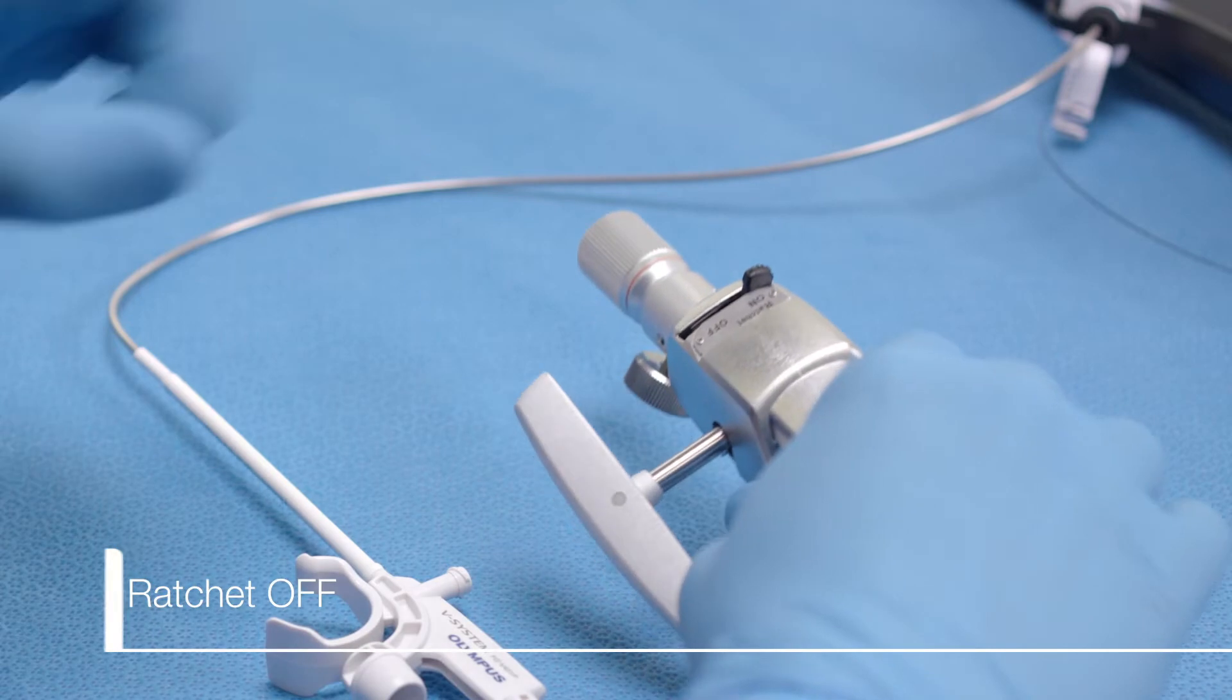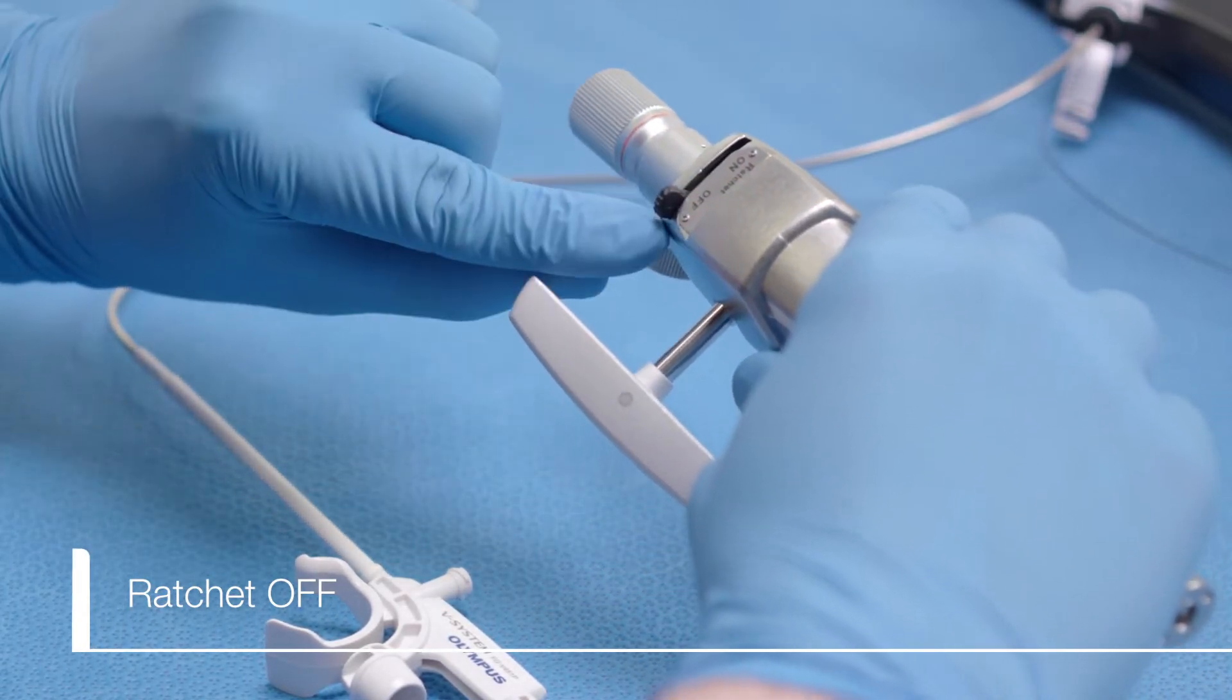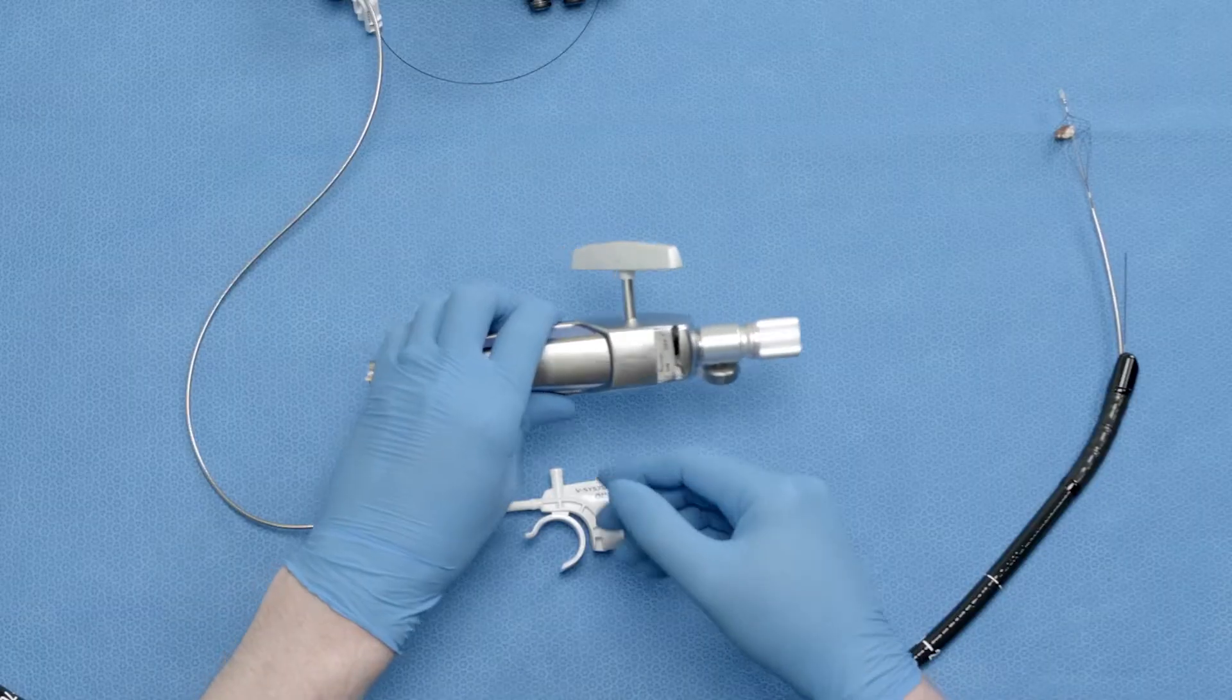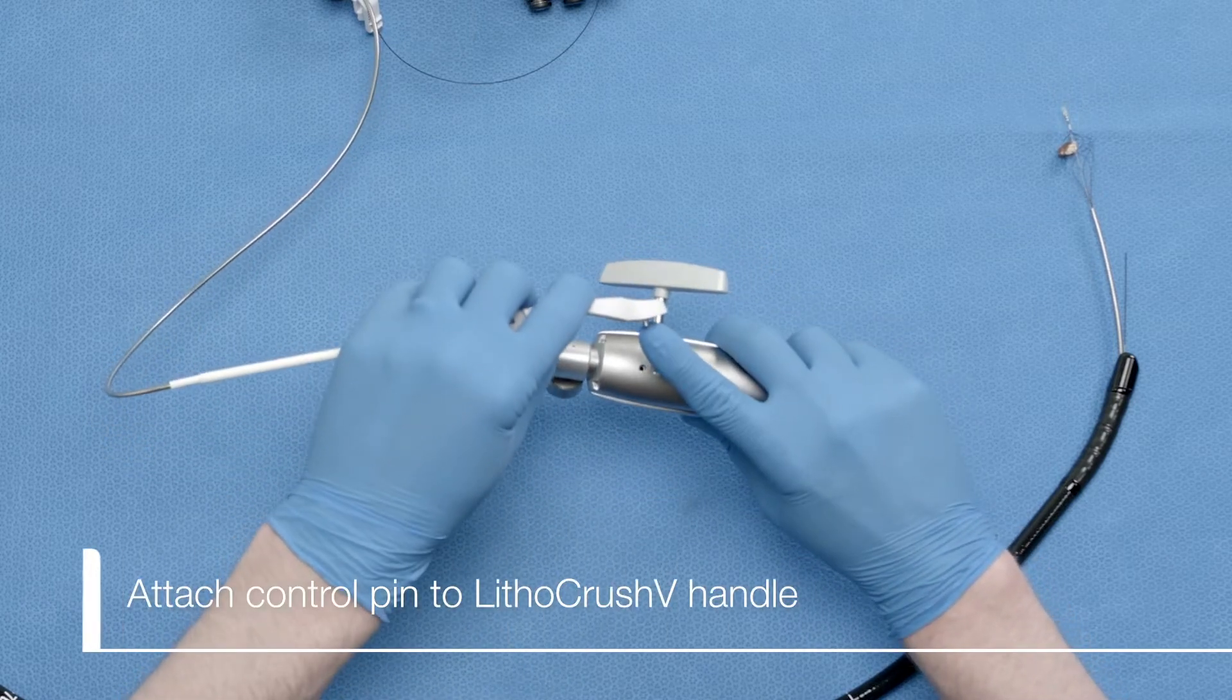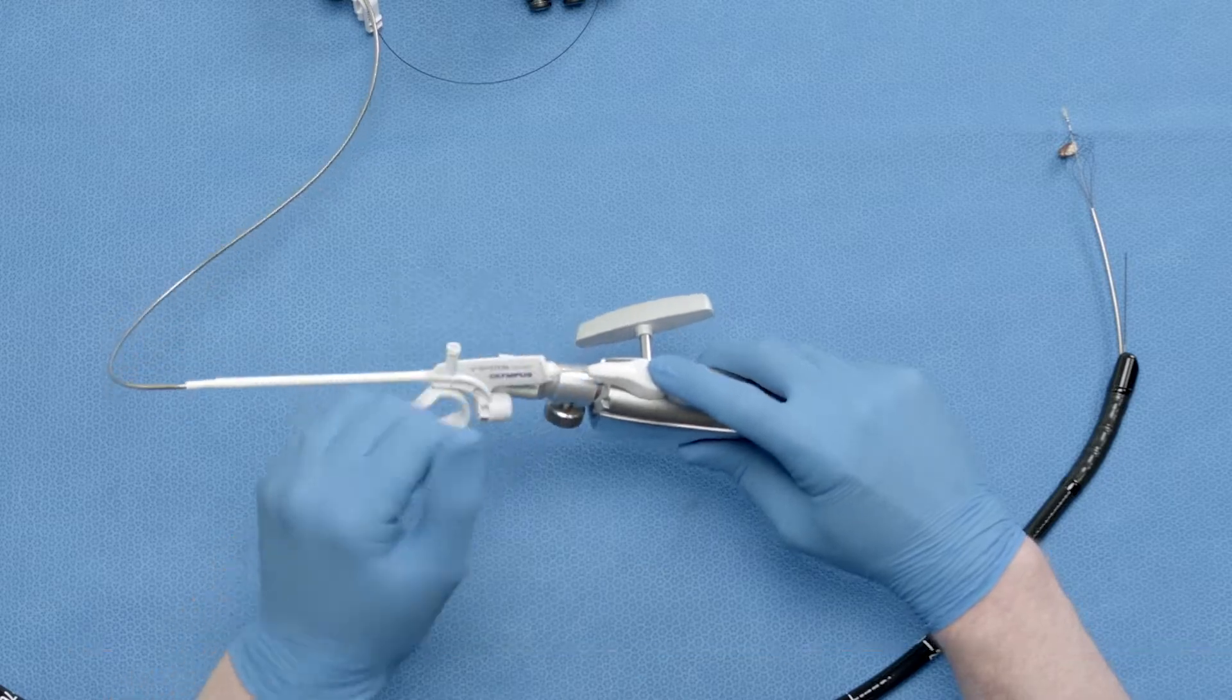Let's start with the Lithocrush V Handle. Push the ratchet switch into the off position. Seat the pin on the control grip of the VortiCatch V Basket into the hole on the underside of the Lithocrush V Handle.